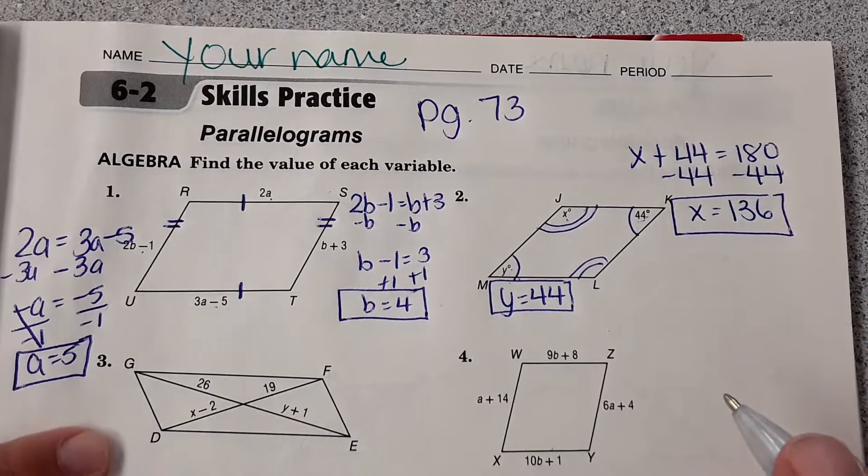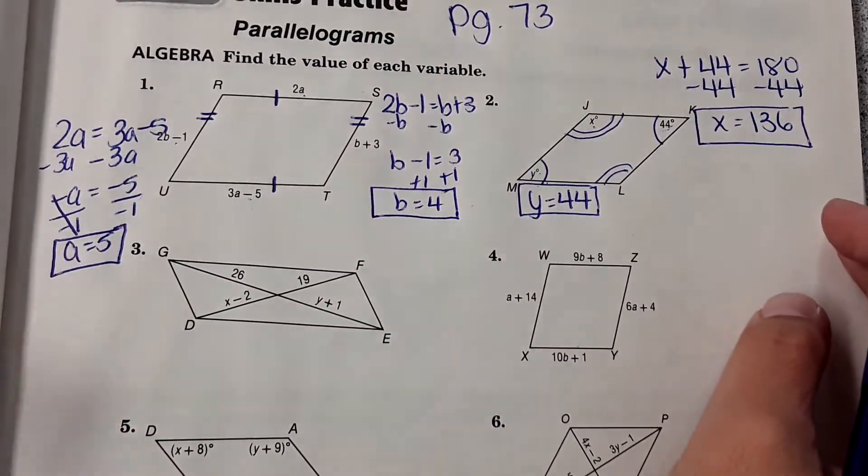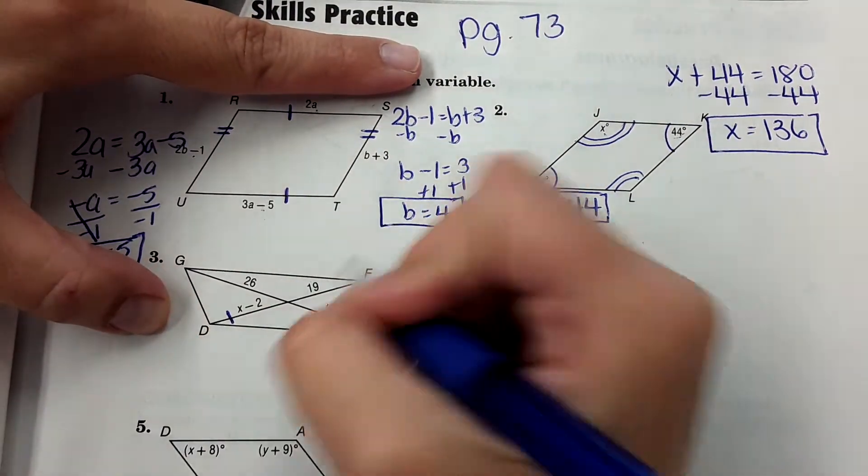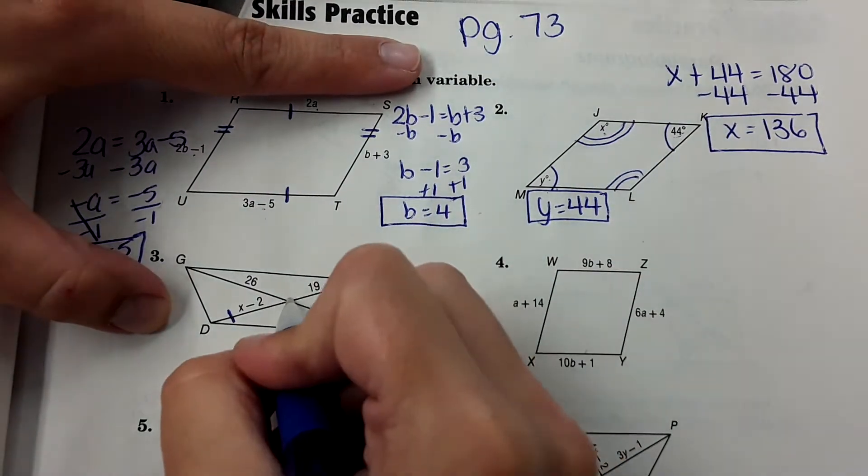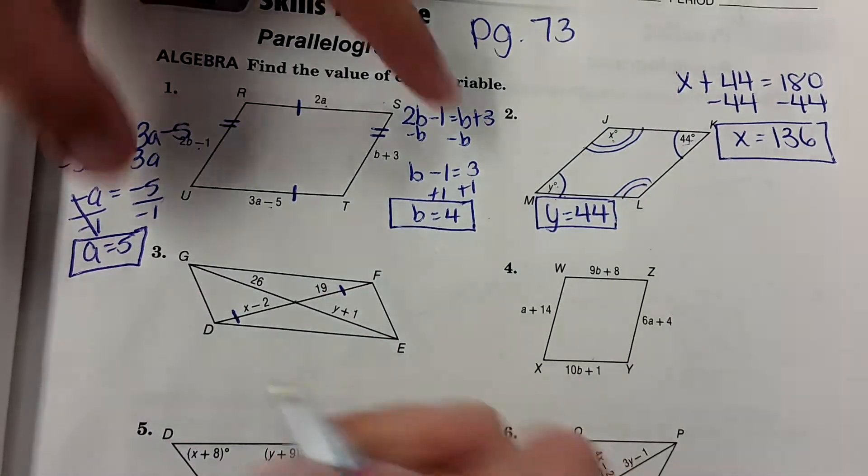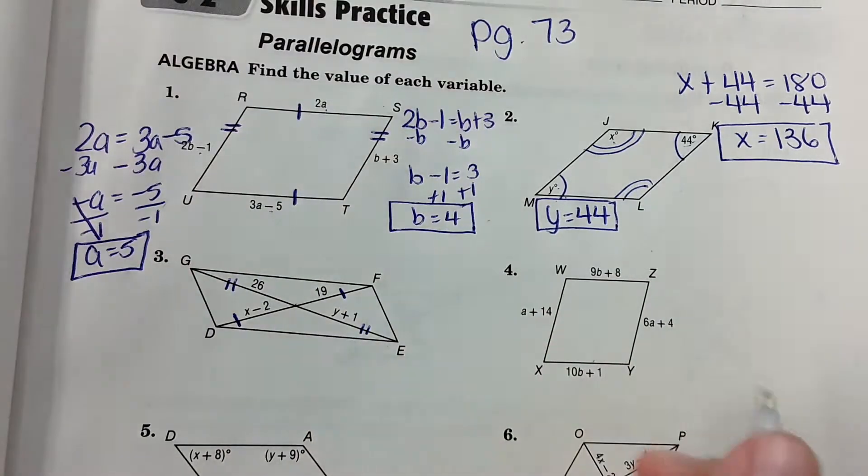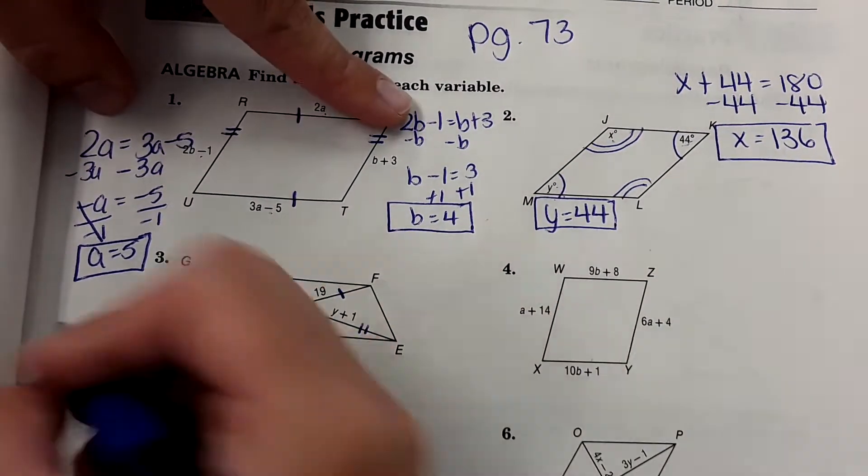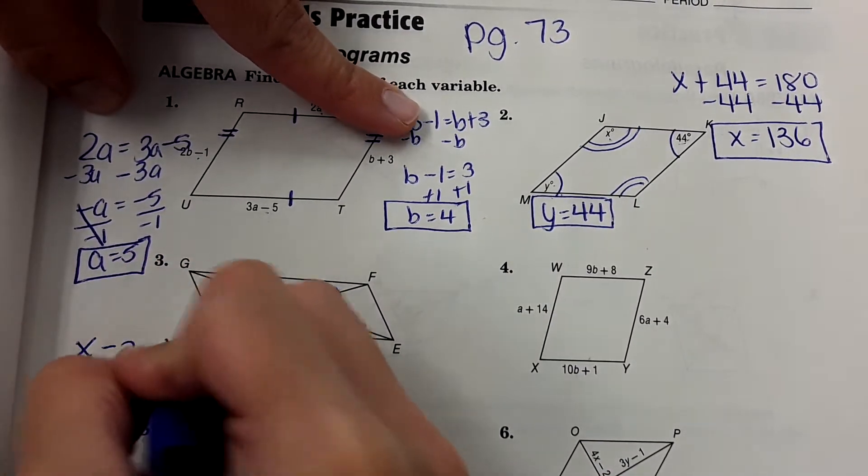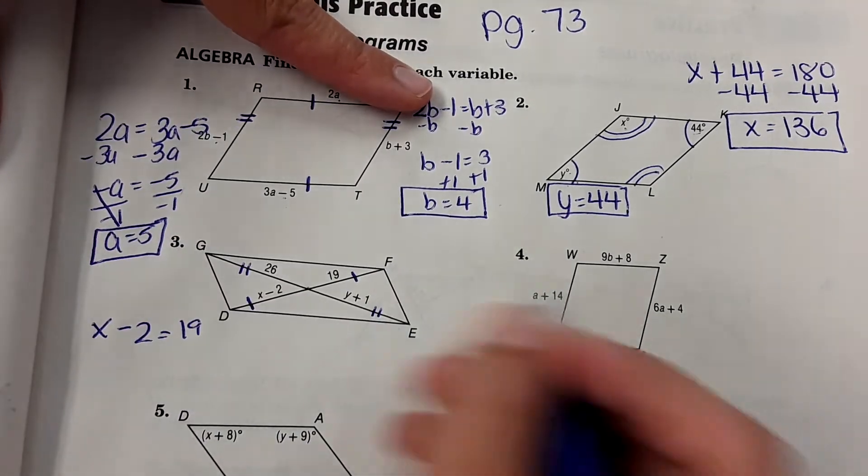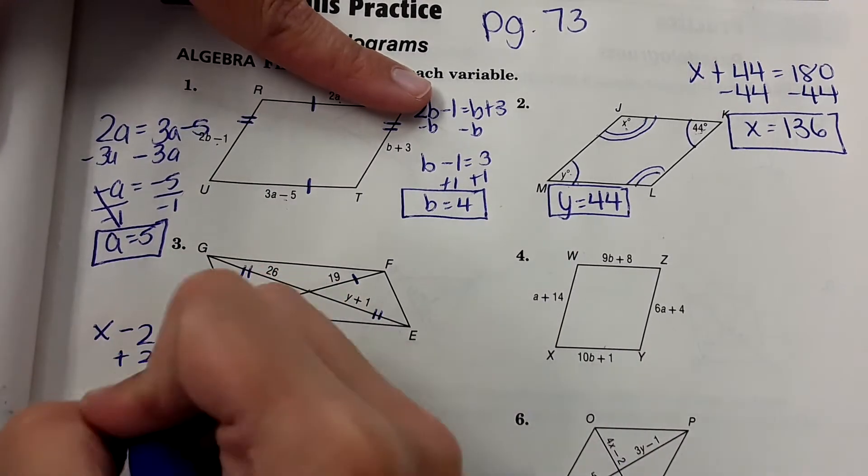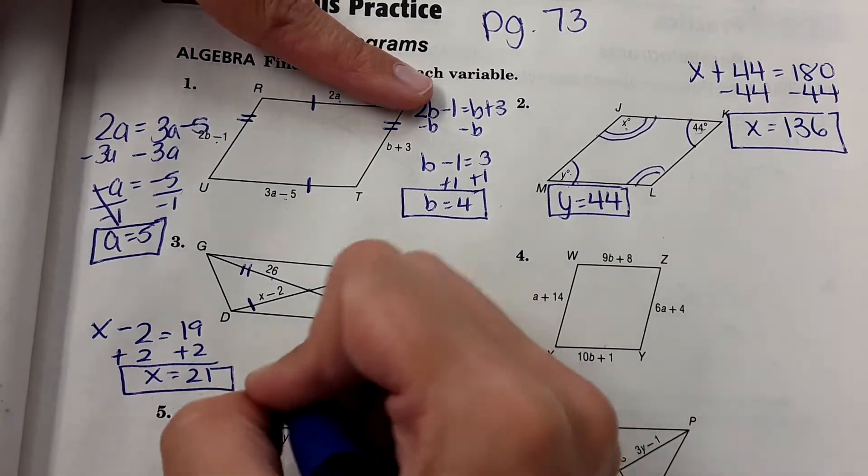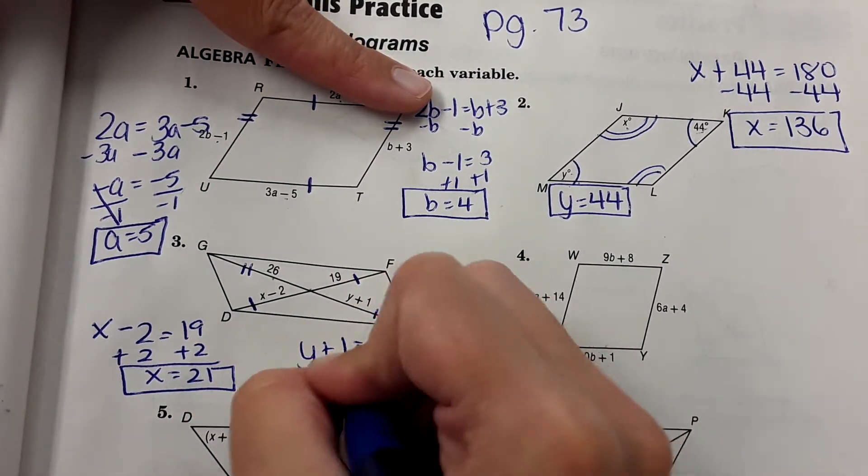Okay, number three. It has the diagonals there. I mentioned that the diagonals bisect each other, meaning that this is the same length as this here. This would be the midpoint of that segment, and then this is the same length as this. So for this you set them equal, set the equal parts equal like this: x minus 2 equals 19, plus 2, x equals 21. And then for this one, y plus 1 equals 26, y equals 25.